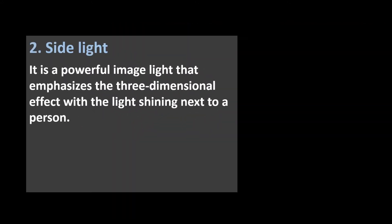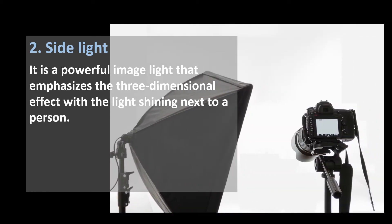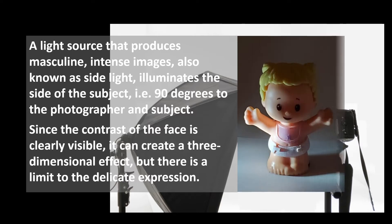2. Side Light. It is a powerful image light that emphasizes the three-dimensional effect with the light shining next to a person. A light source that produces masculine, intense images, also known as side light, illuminates the side of the subject at 90 degrees to the photographer and subject. Since the contrast of the face is clearly visible, it can create a three-dimensional effect, but there is a limit to the delicate expression.